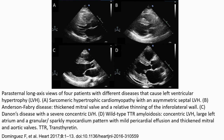This is the parasternal long axis view of four patients with different diseases causing left ventricular hypertrophy. A: Asymmetric hypertrophic cardiomyopathy with asymmetric septal left ventricular hypertrophy. B: Anderson-Fabry disease with thickening of the mitral valve and relative sparing of the inferior wall. C: Danon disease with severe concentric left ventricular hypertrophy. D: Wild-type TTR amyloidosis with concentric left ventricular hypertrophy.